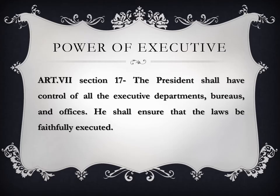The powers of the executive are provided by Section 17 of Article 7: the President shall have control of all executive departments, bureaus, and offices, and shall ensure that the laws be faithfully executed. For example, the President appoints different secretaries and government officials as cabinet members. If the President can appoint secretaries, he can also fire or remove them.